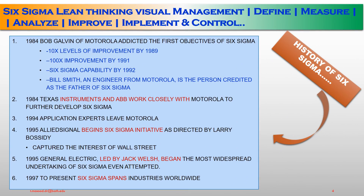Now, the history of Six Sigma. In 1984, Bob Galvin of Motorola directed the first objectives of Six Sigma: first, 10x levels of improvement by 1989; second, 10x improvement by 1991; then Six Sigma capability by 1992. Bill Smith from Motorola is the person credited as the father of Six Sigma.